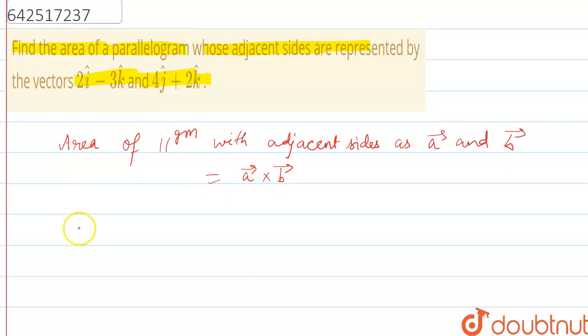So, in this case area of parallelogram with adjacent sides as given vector will be 2i cap minus 3k cap, 4j cap plus 2k cap, cross product of these two.